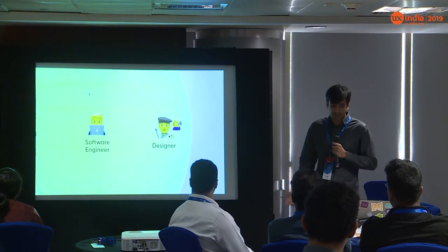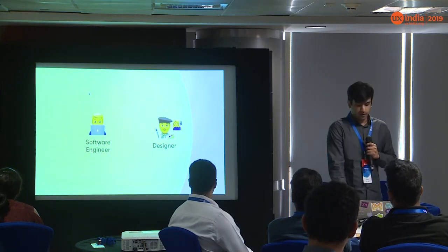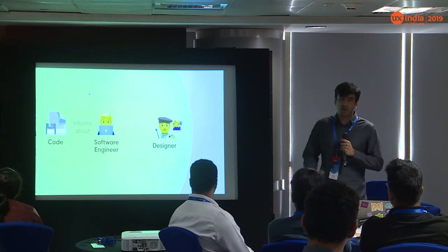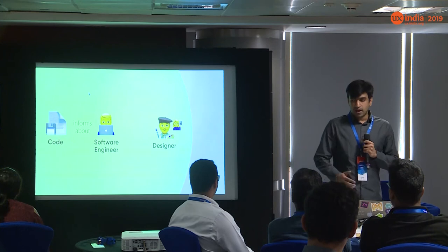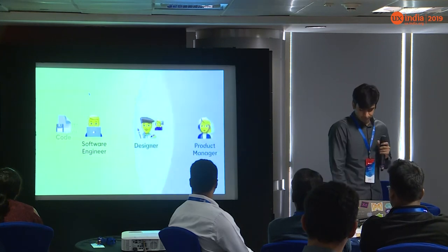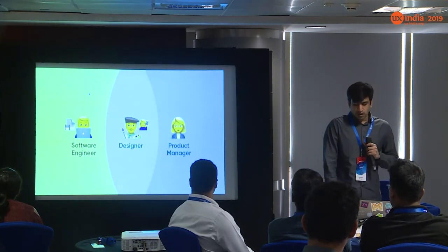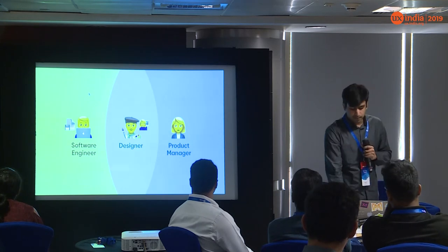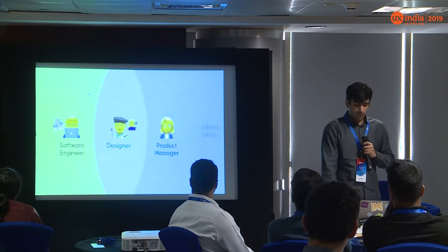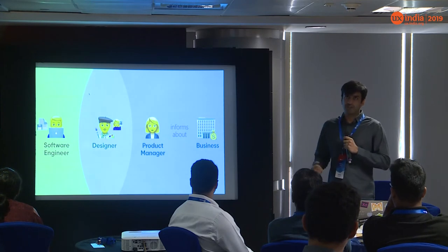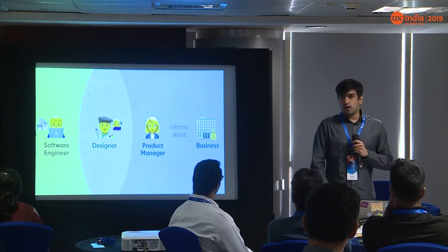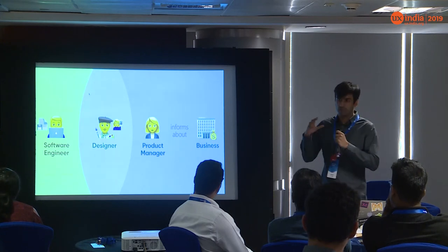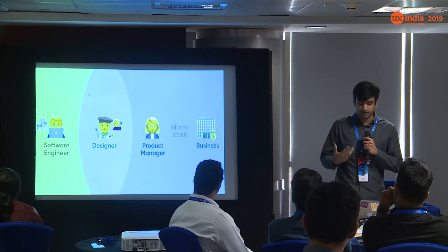Then there is a software engineer whose responsibility is to inform the team about the code — what the code is capable of doing, what they can deliver in the given time and resources. Then lastly, there's a product manager whose responsibility is to inform the team about the business goals, to make sure the product they deliver lives up to the expectations of the business in terms of the company's motive and whether it generates revenue.